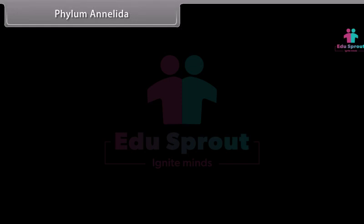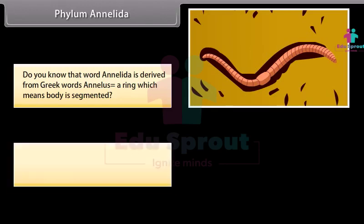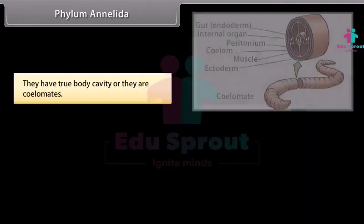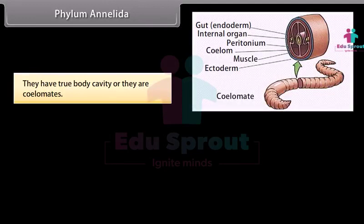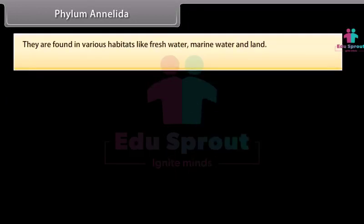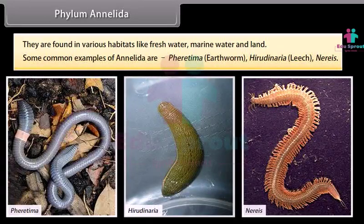Phylum Annelida. The word Annelida is derived from Greek word Annelus, meaning ring — referring to a segmented body. The animals of Phylum Annelida are bilaterally symmetrical, multicellular, and triploblastic. They have a true body cavity, so they are coelomates. Organs are present and distributed in a metamerically segmented body. They are found in various habitats including freshwater, marine water, and land. Common examples are Pheretima (earthworm), Hirudinaria (leech), and Nereis.